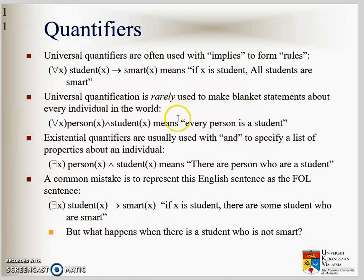Universal quantifier is rarely used to make a blanket statement about every individual in the world. Usually we use it to form rules, not as an introduction, not as a statement. For example here, there is no implies, there is no then. Look at here, you have then, implies. Here there is no implies. We rarely say that every person, every X where X is a person and X is a student. Every person is a student. It's quite dangerous to make a blanket statement with universal quantification because usually there will be some exception.